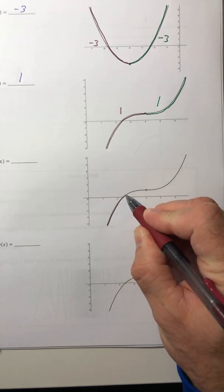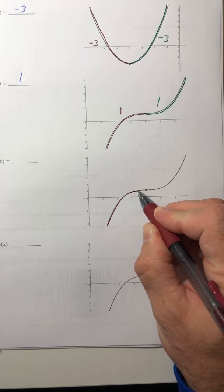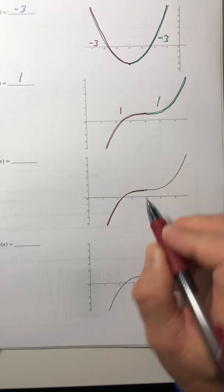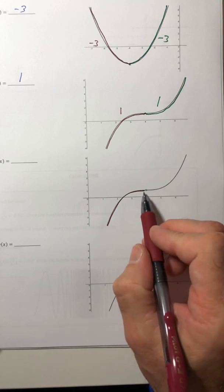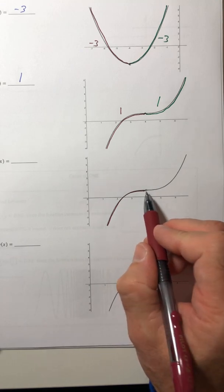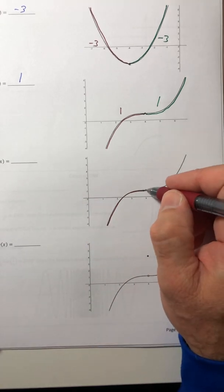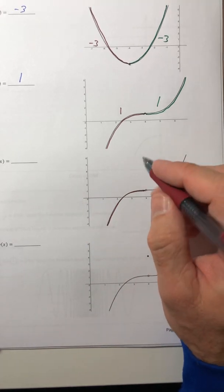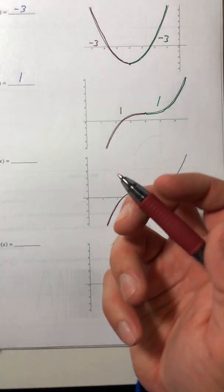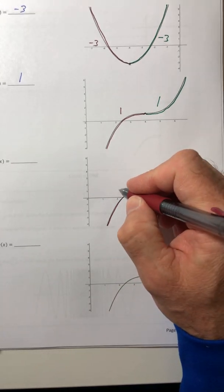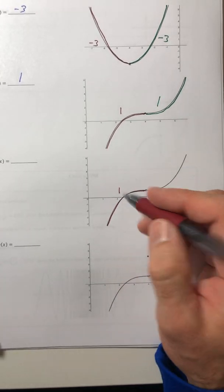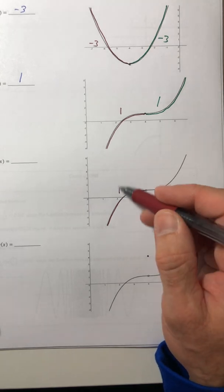So as X gets closer and closer to four, what Y value does it look like you would eventually run into if you could? Well, it looks like you would run into Y equals one. You can't actually hit it because there's a hole there, but it looks like you could run into it if it was possible. So you're getting closer and closer to Y equals one.